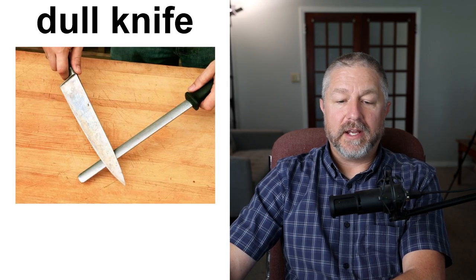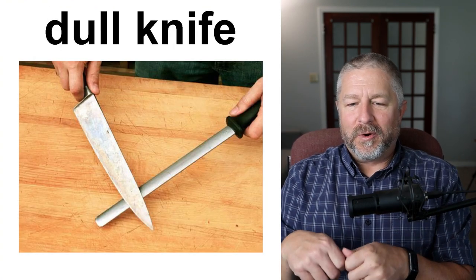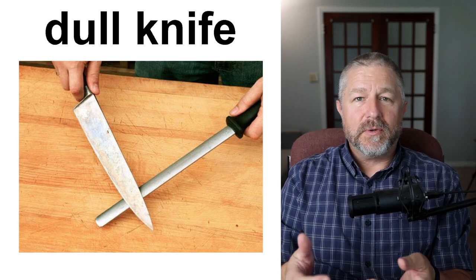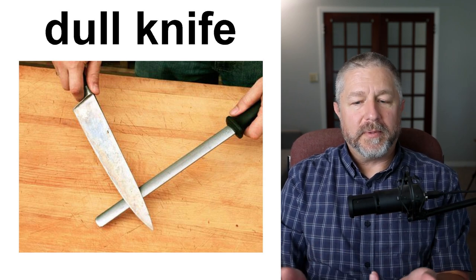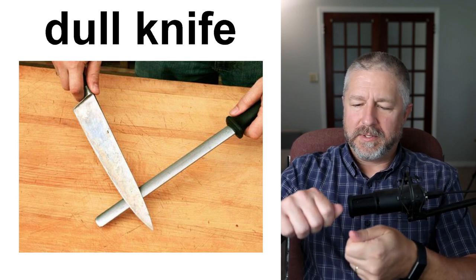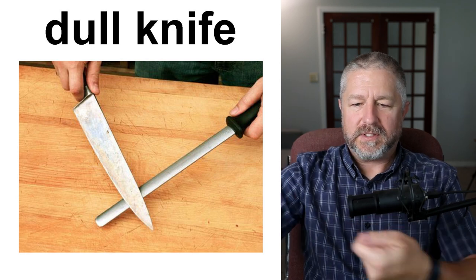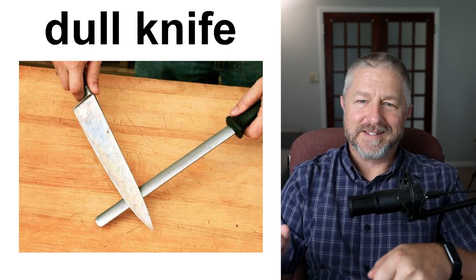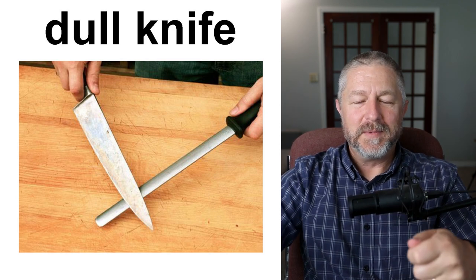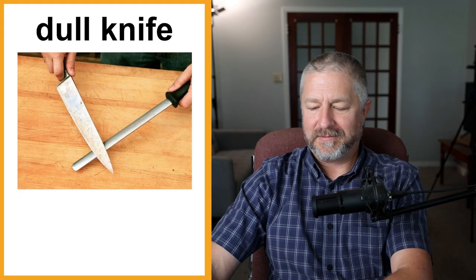A dull knife. You might be trying to cut a loaf of bread or a steak and the knife is dull. If you have a dull knife, you can sharpen it. Maybe you have a knife sharpener, or you'll see a chef on TV doing zip zip zip zip — that's how they sharpen a dull knife.